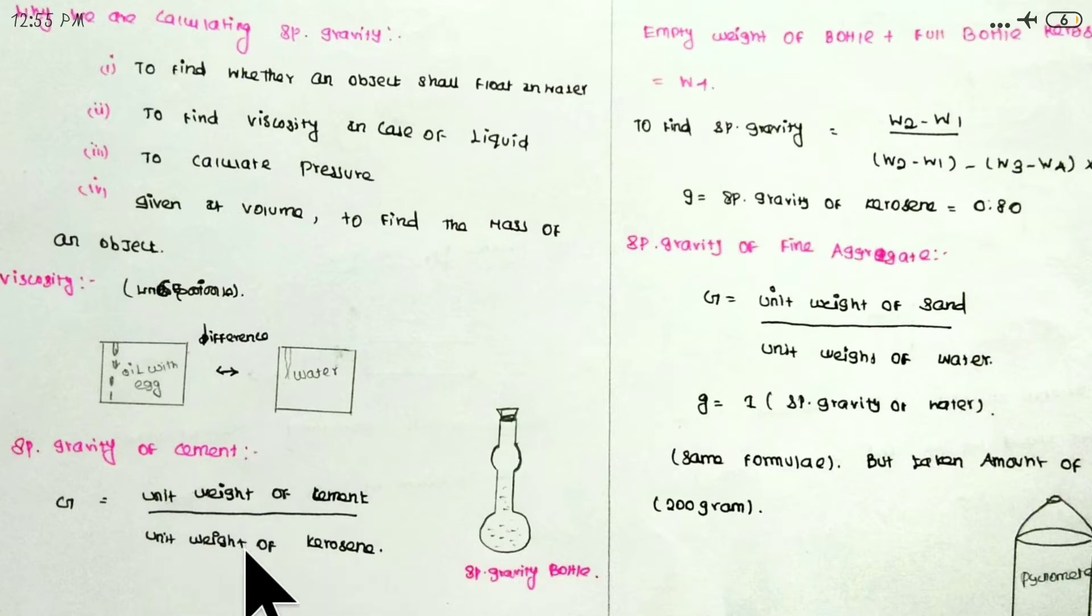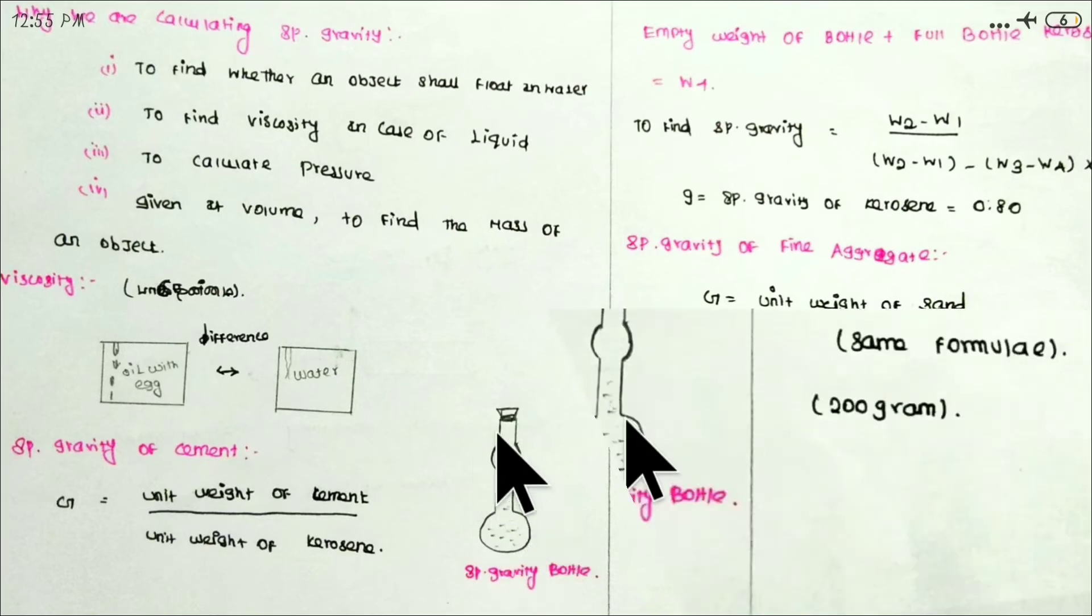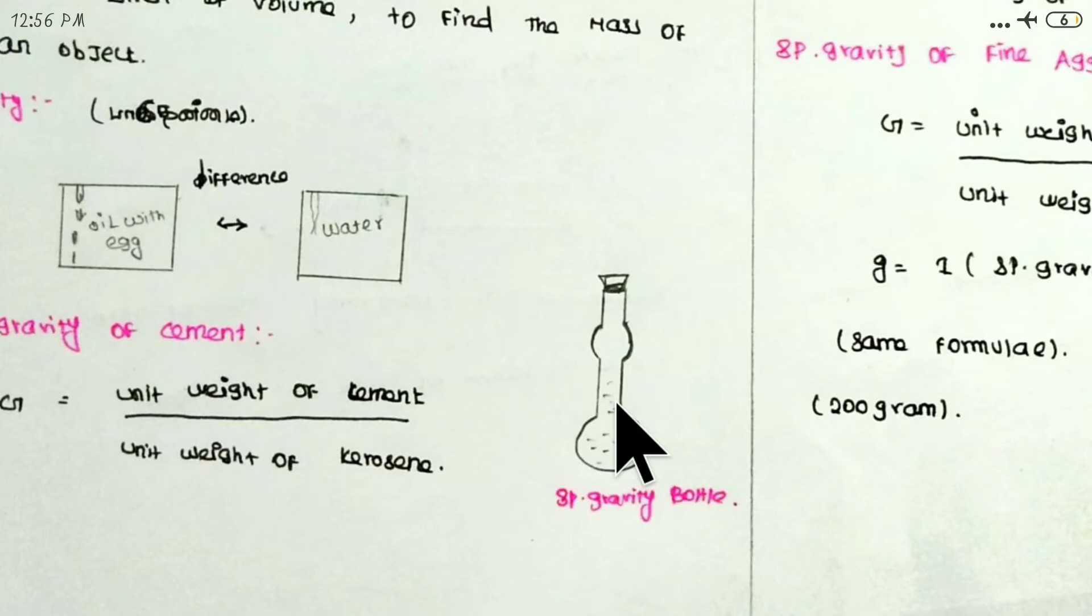Kerosene is used for this test. If we take water, it will be absorbed. If we apply heat to generate it, we will use kerosene instead. Let's take the project. The bottle is a specific gravity bottle - this is the specific gravity bottle.